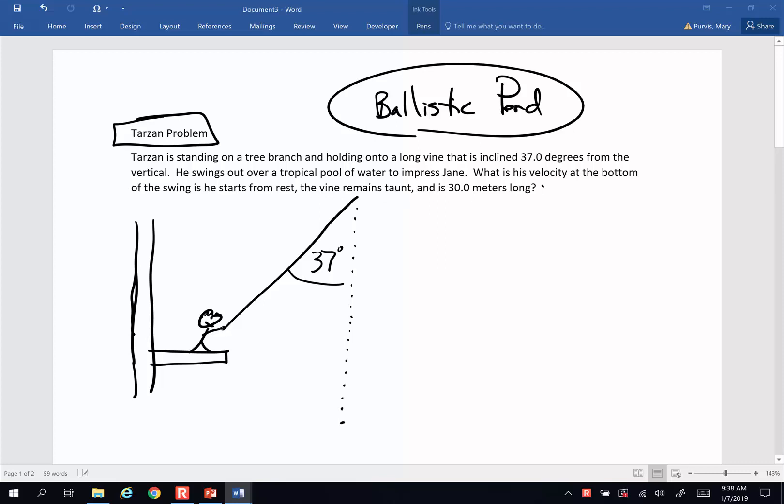So what's going to happen here is Tarzan is going to swing like this down. Now this is not a straight line, this does not make a right triangle. He actually swings in a big arc, and I want to know what is his velocity when he gets to the bottom of the arc.